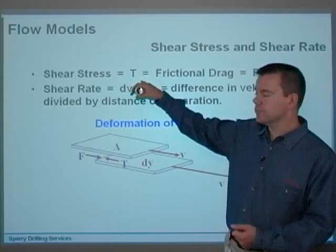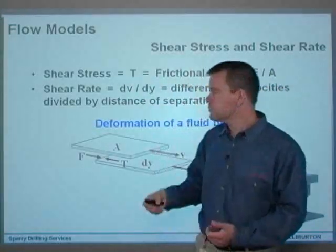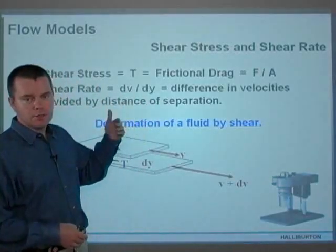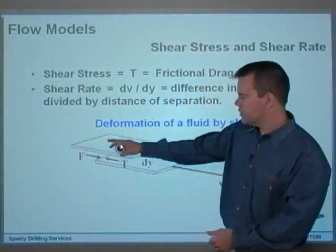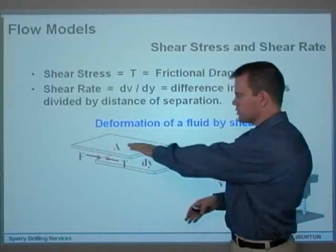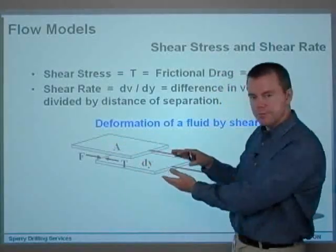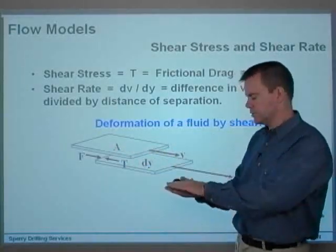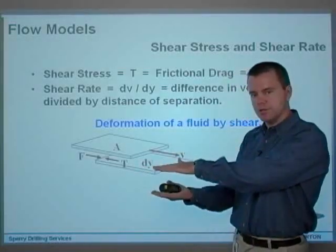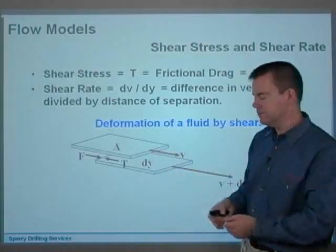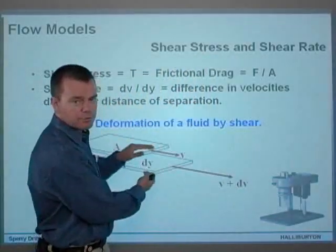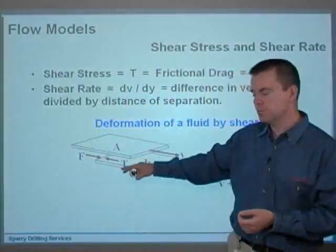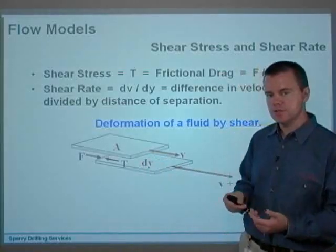Shear stress is normally defined by the symbol tau — here we've got a capital tau, which is basically the same as a capital T — and it's essentially frictional drag, which is force divided by area. Shear rate is the difference in velocities divided by the distance of separation. If you look at this diagram, imagine two plates with a piece of fluid between them: one static and one moving. The difference in velocity is dv, and the distance apart is dy.